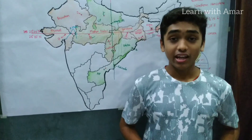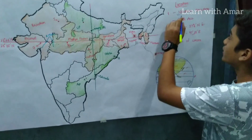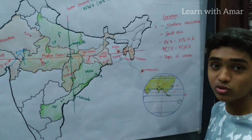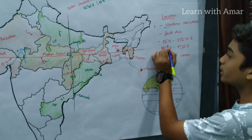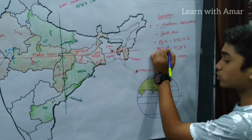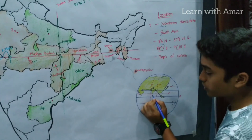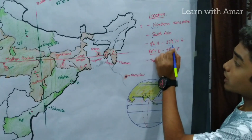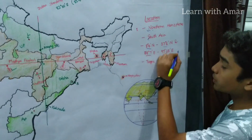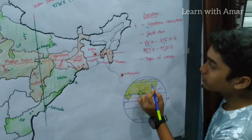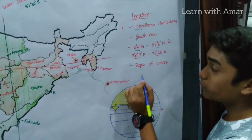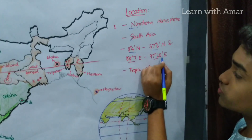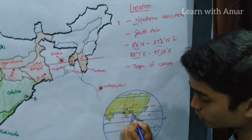Describe India's location. India is located in the northern hemisphere, in South Asia. Regarding latitudes and longitudes, it is located between 8 degrees 4 minutes north latitude and 37 degrees 6 minutes north latitude, and between 68 degrees 7 minutes east longitude and 97 degrees 25 minutes east longitude.